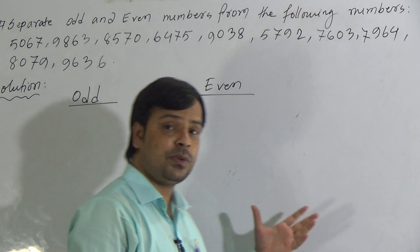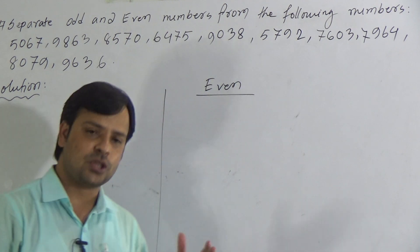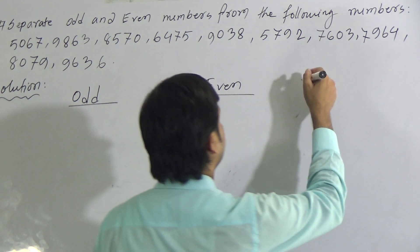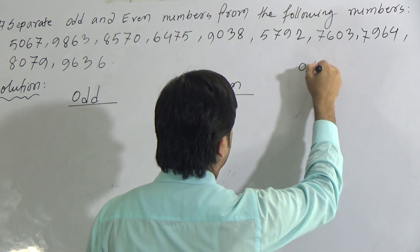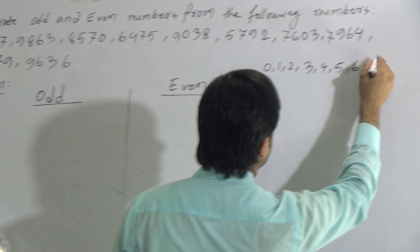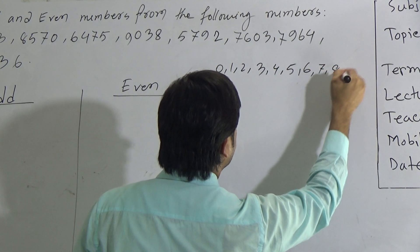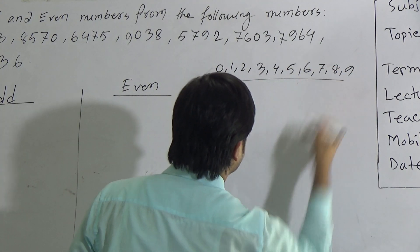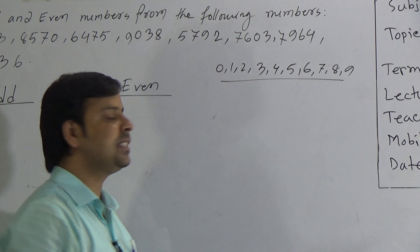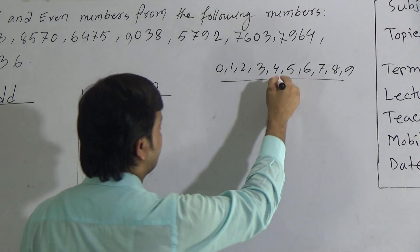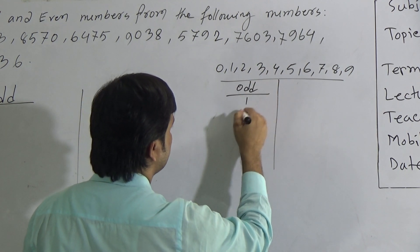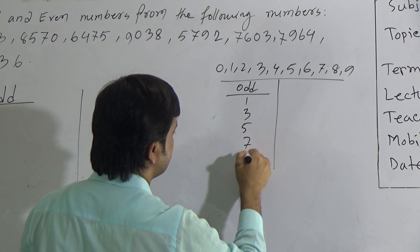at first we have to know when we can say a number is odd or a number is even. You know there are 10 digits in math: 0, 1, 2, 3, 4, 5, 6, 7, 8, and 9. Among these 10 digits, 5 digits are odd and 5 digits are even. The odd digits are 1, 3, 5, 7, and 9.